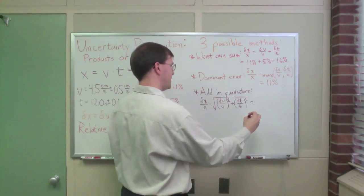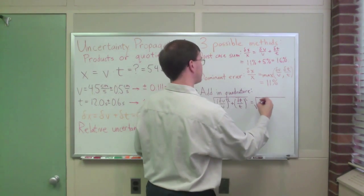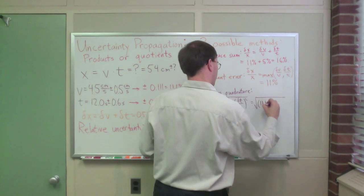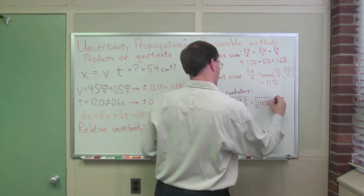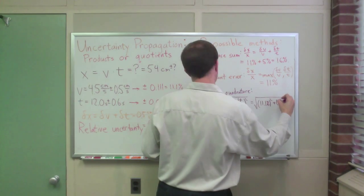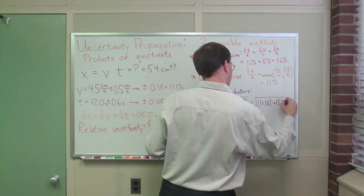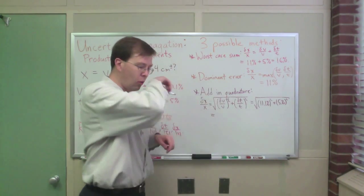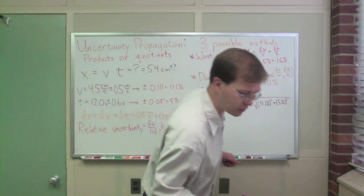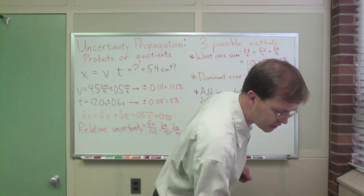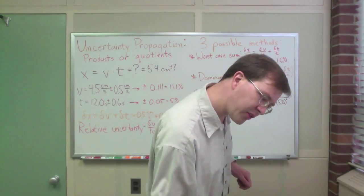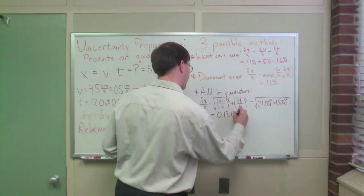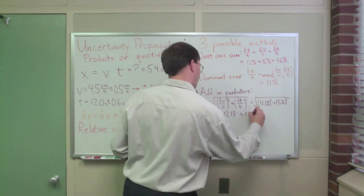So, in that case, it is the square root of delta v over v was my 11%. I'll do 11.1% squared plus 5% squared. And when I do that square root, I have to look this one up since I can't do this one off the top of my head. When I do that square root, I come up with about 0.1218, which is basically 12%.